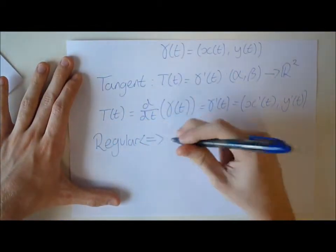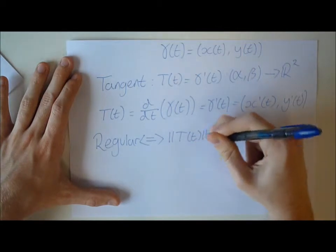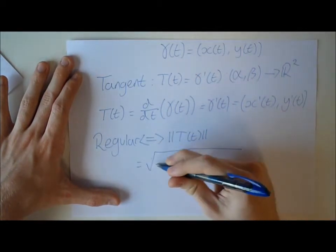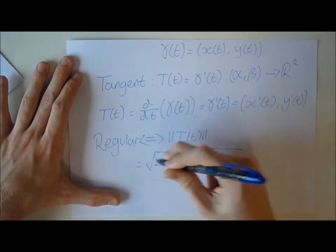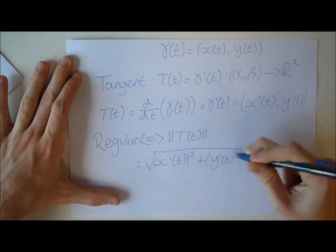A curve gamma is called regular if and only if the length of the tangent is not equal to 0 for all t in (alpha, beta).